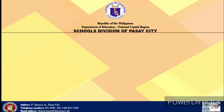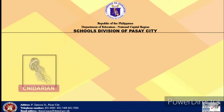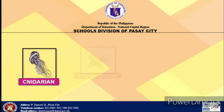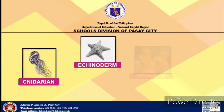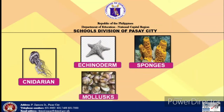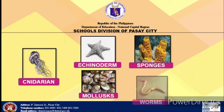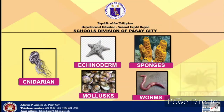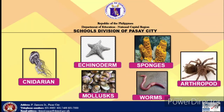Invertebrates are classified into cnidarians, echinoderms, sponges, mollusks, worms, and arthropods.